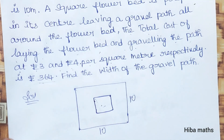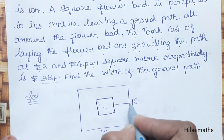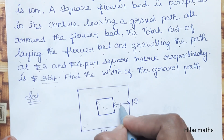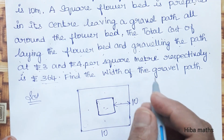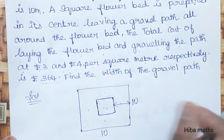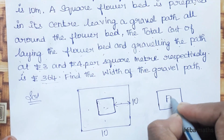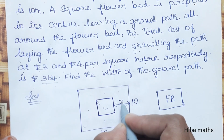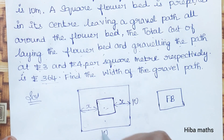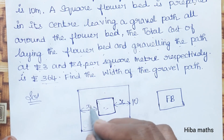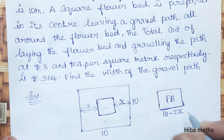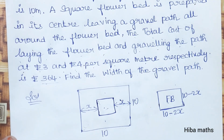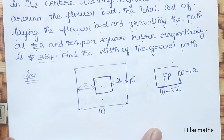We need to find the width of the gravel path. Let the width of the gravel path be x. The side of the square flower bed is then 10 minus 2x meters.